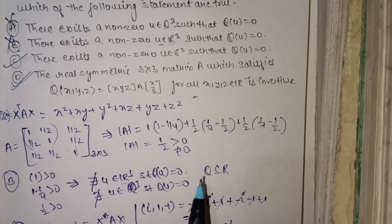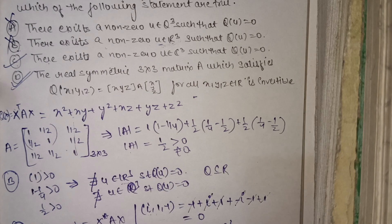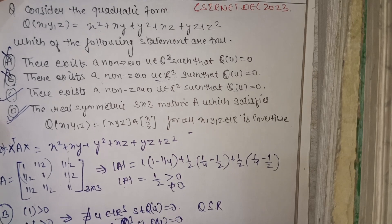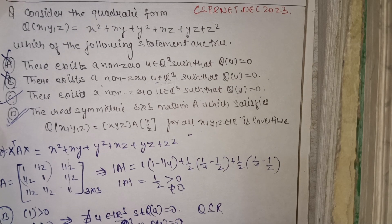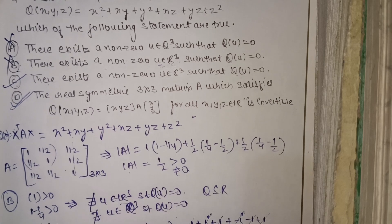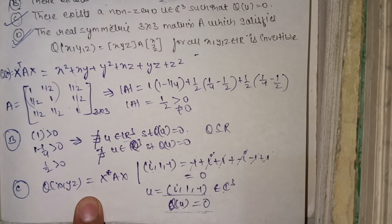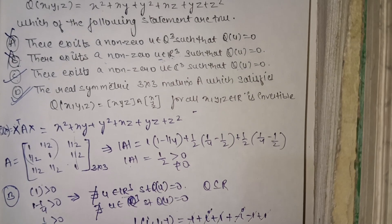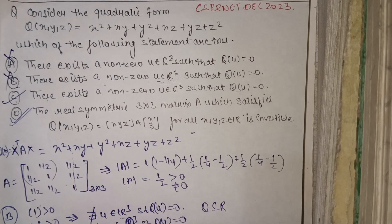So options C and D are true. This was a recent question from CSIR NET December 2023, and the solution is based on quadratic forms and positive definiteness. If you liked this video, hit the like button, and subscribe for more such videos. Thank you for watching.